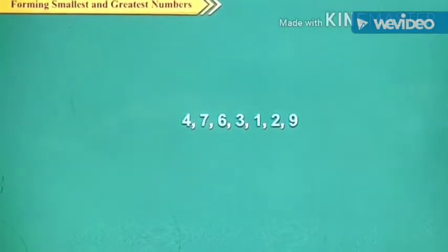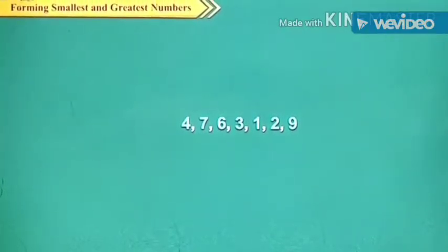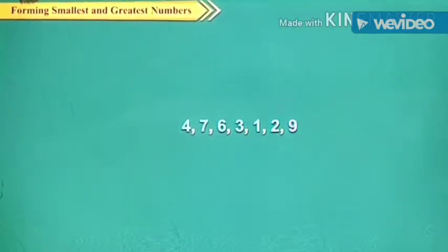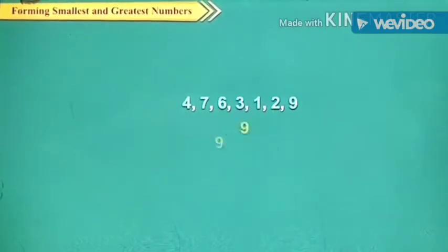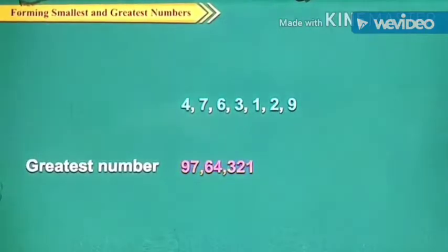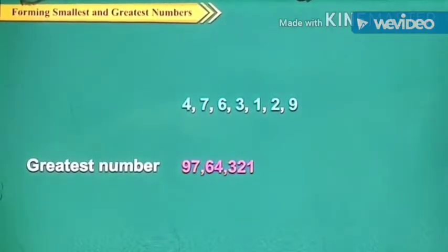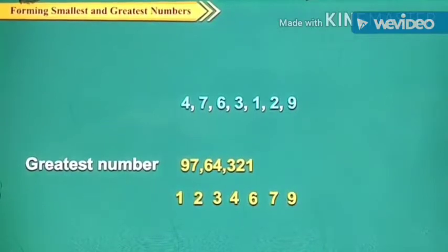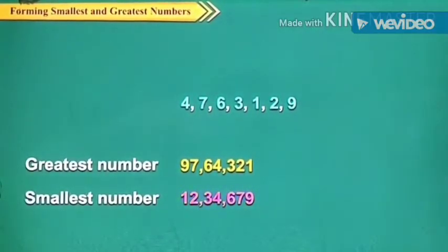Let us write the greatest and the smallest 7-digit number without repeating the digits, using the given digits: 4, 7, 6, 3, 1, 2, 9. Arranging in descending order, we get 9, 7, 6, 4, 3, 2, 1. So the greatest number is 97,64,321. Similarly, by arranging the given digits in ascending order, we get the smallest number: 12,34,679.